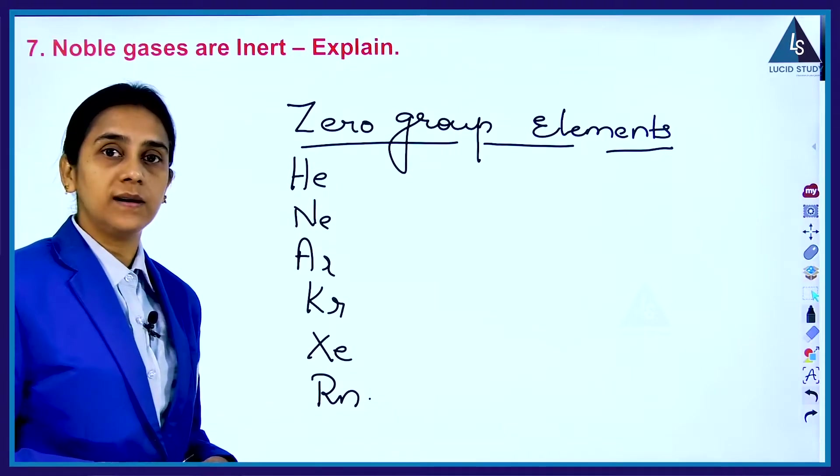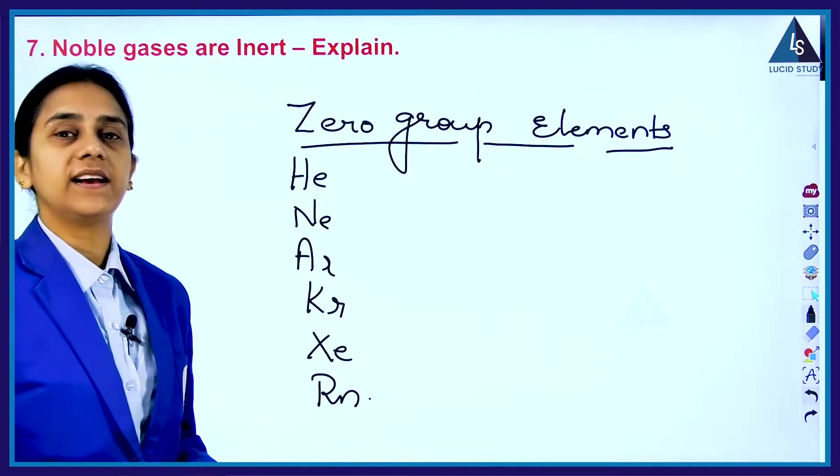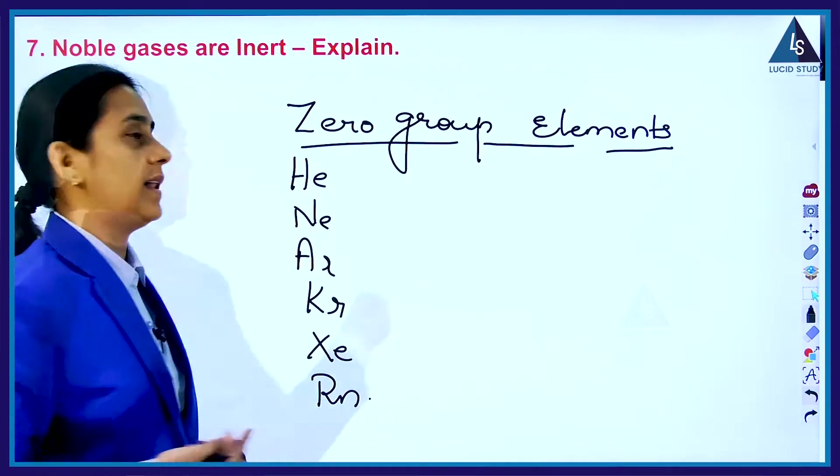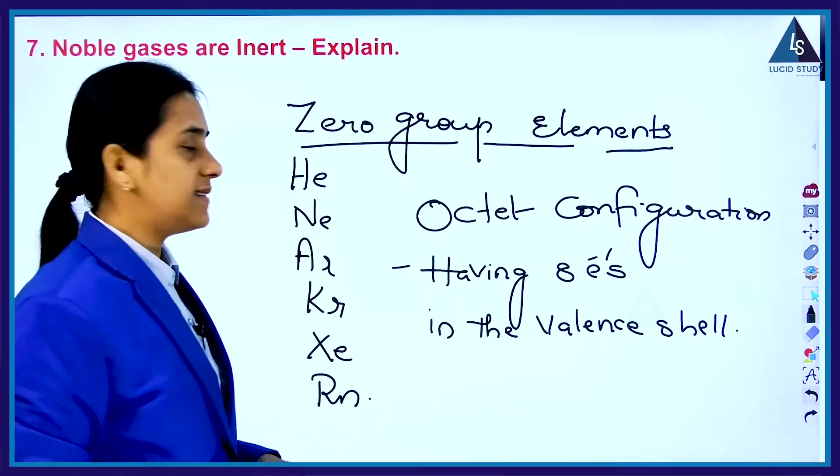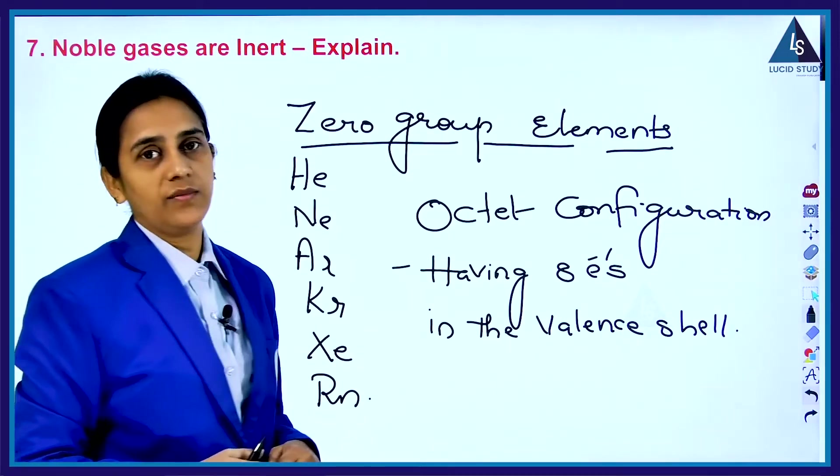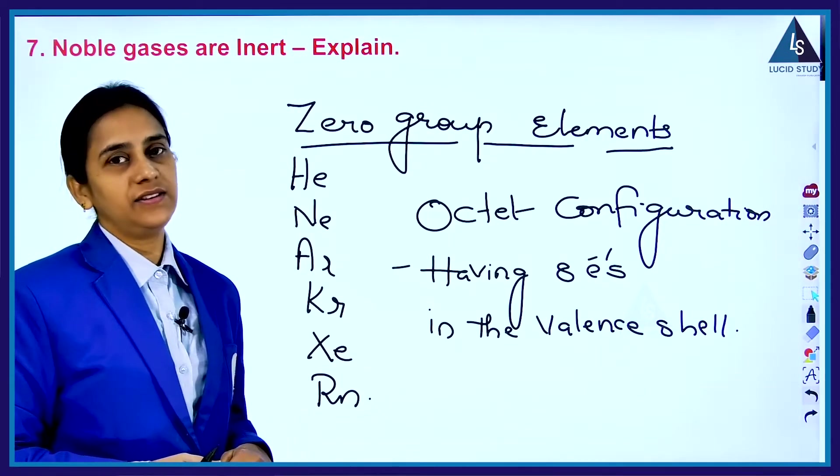Inert means stable in nature because it's having eight electrons in their valence shell, and that is called octet configuration. Having eight electrons in the valence shell is called octet configuration. Due to that, it is stable in nature.